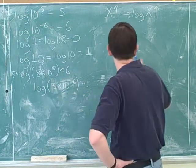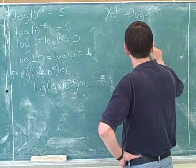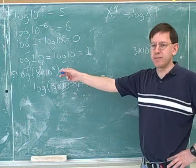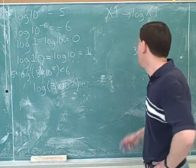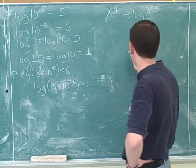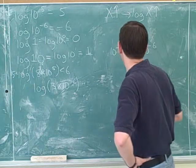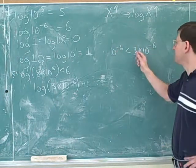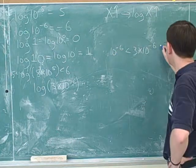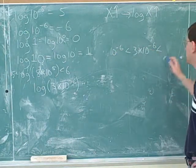I'm going to start by forgetting about the log, and I'm just going to write down the number 3 times 10 to the negative 6. For a second, I'm going to forget about the log. And then I'm going to compare this to some numbers that are easier to work with. So I'm going to compare this to 10 to the negative 6. We know this number is bigger than 10 to the negative 6.